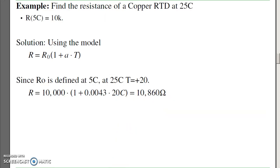For example, if I have a copper RTD where the resistance is 10k at 5 degrees Celsius, if I increase the temperature to 25C, the resistance increases from 10,000 ohms to 10,800. So likewise, any time I have metal, the resistance does change with temperature.